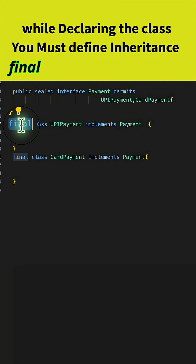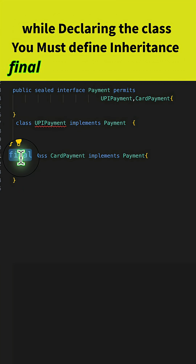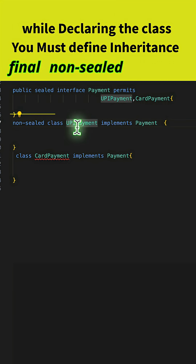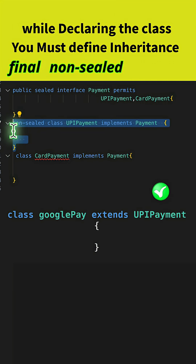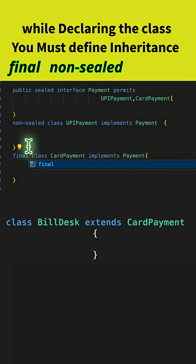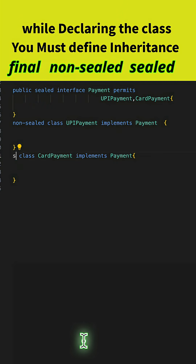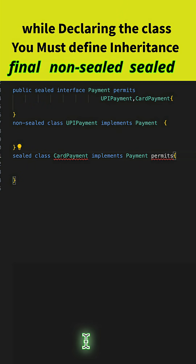If you remove the final keyword, you will get a compilation error because Java wants you to define how this class will be inherited further. For example, without writing final, you can write non-sealed, meaning UPI Payment can be further subclassed by other classes. Or you can mark it as final to prevent subclassing, or define it as sealed again and permit which classes can extend it later.